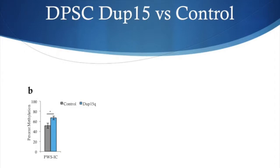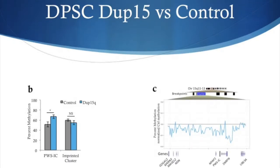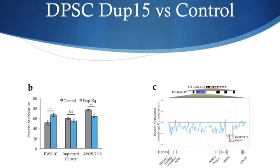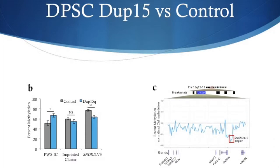All of this epigenetic information has been retained in the DPSCs. In my other recent publication examining DNA methylation in post-mortem DUP15Q brain samples, we found a hypomethylated cluster over the entire imprinted locus. While the DPSCs are trending towards hypomethylation, they are not yet significantly decreased. However, we believe that the DPSCs model an earlier stage of epigenetic changes found in DUP15Q syndrome. Specifically, if you look at the SNORD116 region, it already has evidence of hypomethylation.